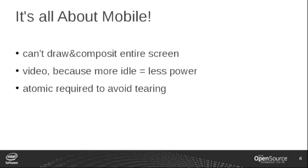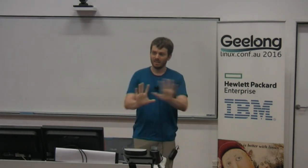Essentially, the real reason we needed atomic updates — all in one go, not applied as individual bits and pieces — was for mobile to avoid tearing. Why wasn't KMS atomic? That's just an accident of history, because the X server is front-buffer drawing — it draws as soon as it gets a command from clients, so it doesn't have a concept of 'now everything is complete, now you can draw your frame, update your cursor position, update the video overlay.' That's why KMS was not atomic.